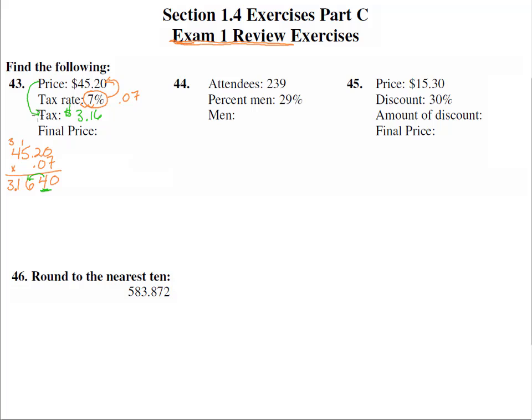So if that's how much tax there was and this is the price, this gets added on to it. 45.20 plus 3.16. Notice there are two parts to this problem: first figure out the amount of tax, then add that on to get the final price. Zero plus six is six, two plus one is three, five plus three is eight and four. The final price is $48.36. Of that $45.20 original price, they added a 7% tax of $3.16.